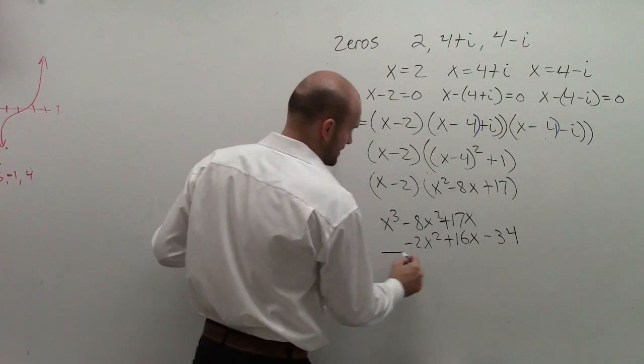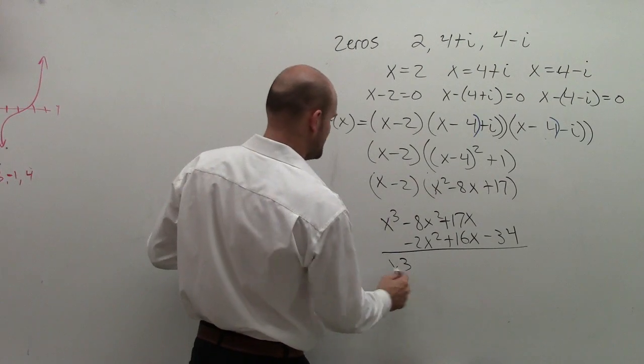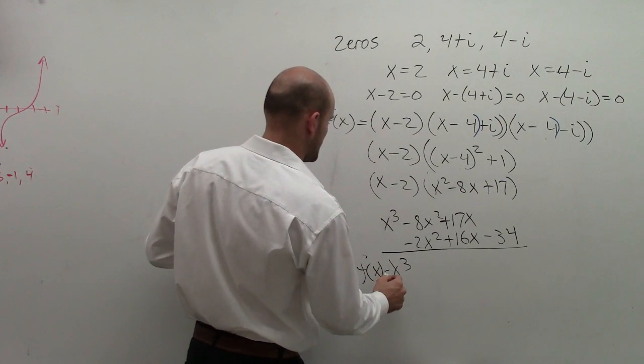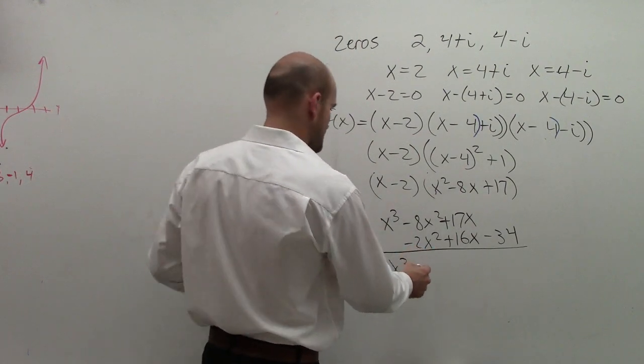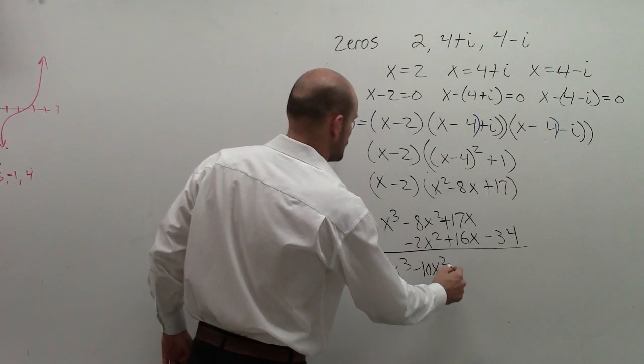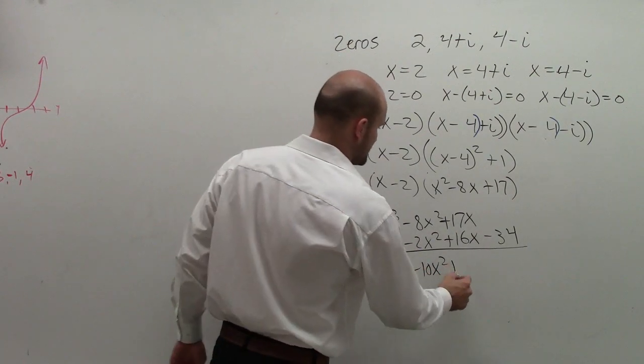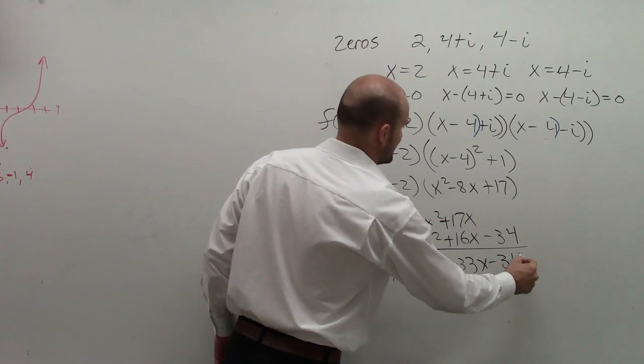So then I just now combine them. So I get x cubed, so f of x equals x cubed minus 10x squared plus 33x minus 34.